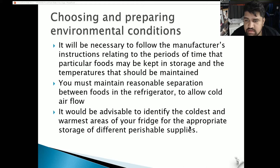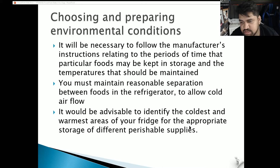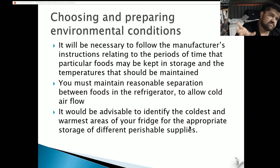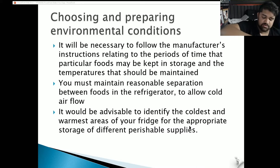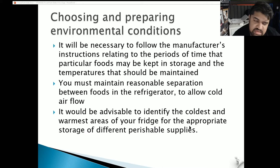It would be advisable to identify the coldest and warmest areas of your fridge for appropriate storage of different perishable supplies. In a normal fridge, hot air rises, so the highest part is the warmest. Near the vents at the bottom you'll find the coldest air, as cold air tends to drop. Once you've identified this, you can plan where to put things and how to store them accordingly.